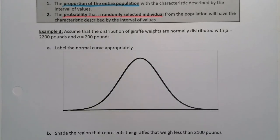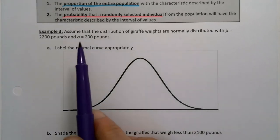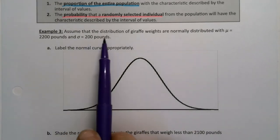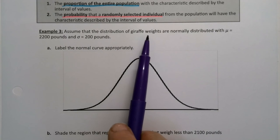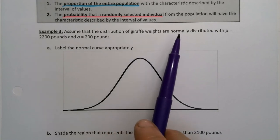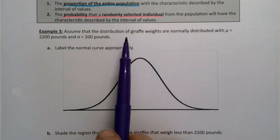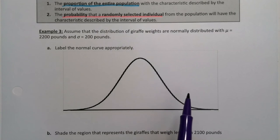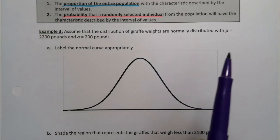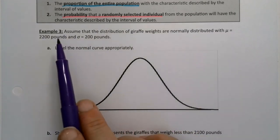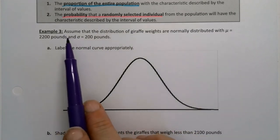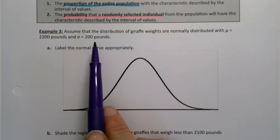It's not going to change the probability or anything. Let's look at this example and it'll probably become a little bit clearer. We have a population of giraffes and their weights are normally distributed — what they weigh follows a normal distribution. It has a mean of 2,200 pounds and a standard deviation of 200 pounds.